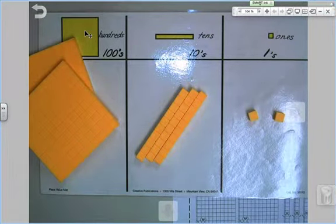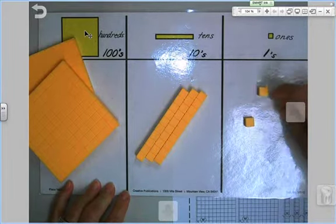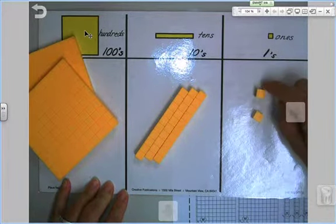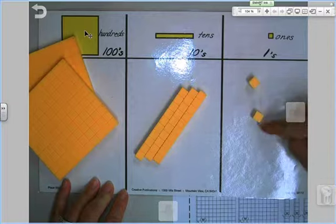I know that a lot of you've probably seen these little ones before. They are called ones because they're worth one. So here I have one, two. Easy, right?